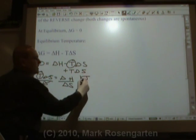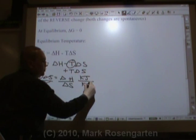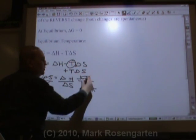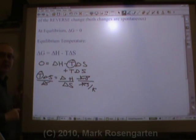Kilojoules will cancel and leave you with Kelvin, which is what we're trying to find out in temperature. So temperature is delta H divided by delta S.